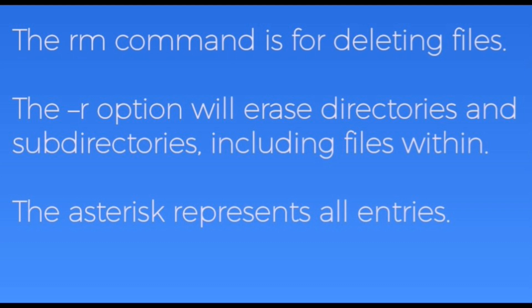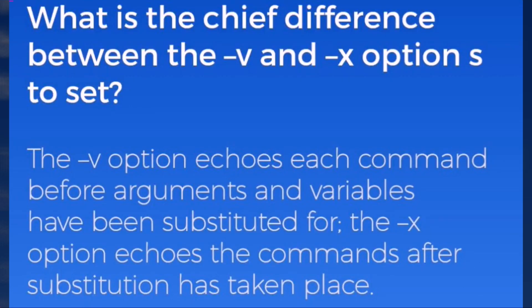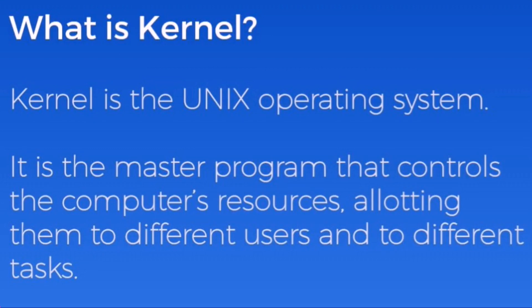What is the chief difference between the -v and -x options? The -v option echoes each command before arguments and variables have been substituted. The -x option echoes the commands after substitution has taken place.